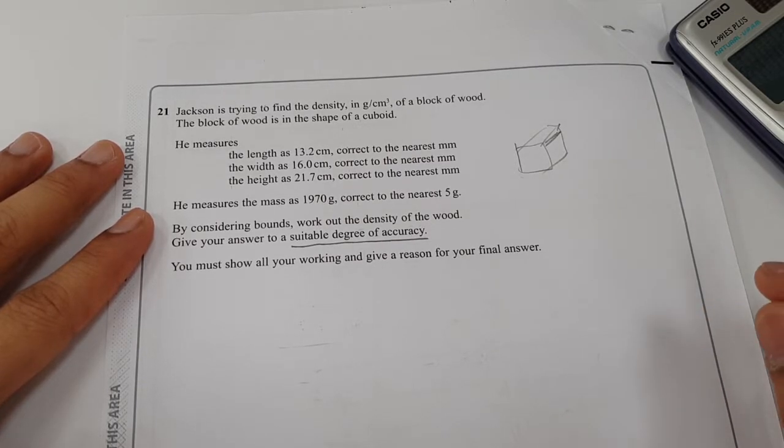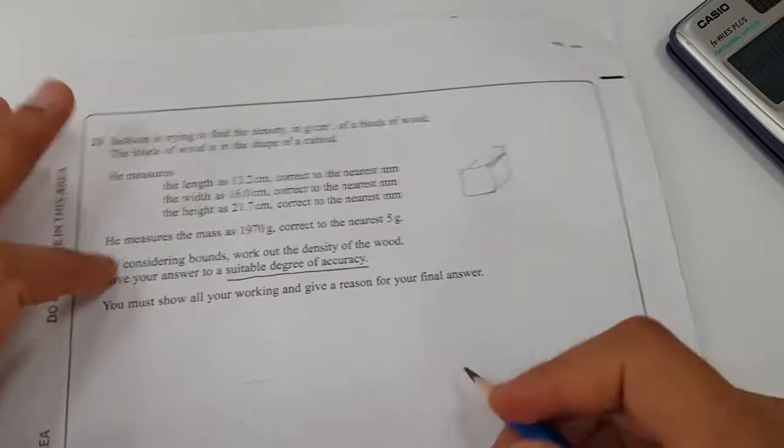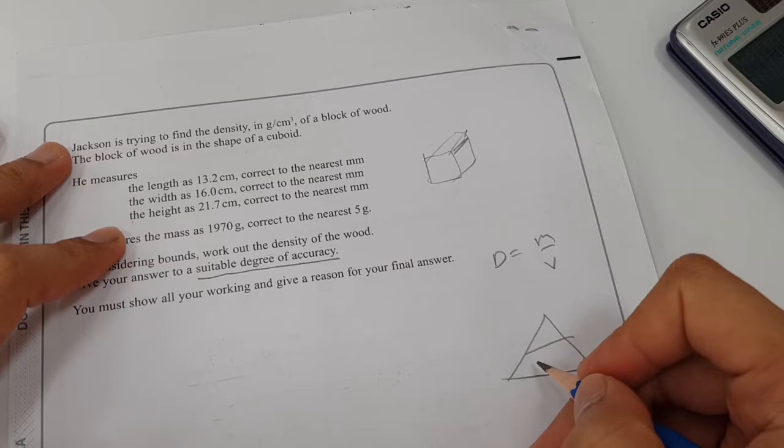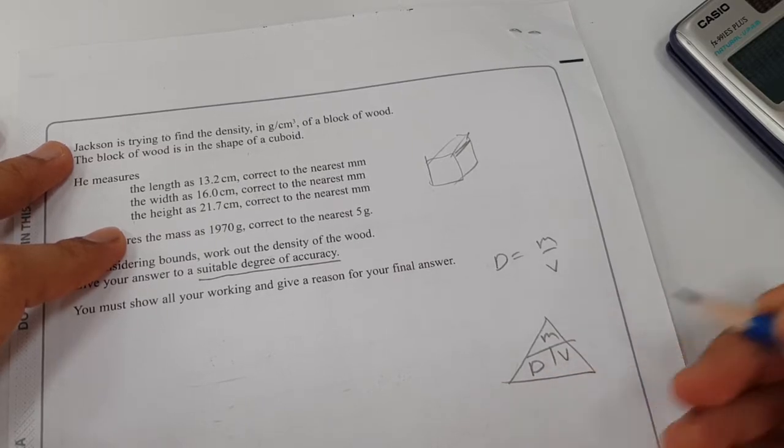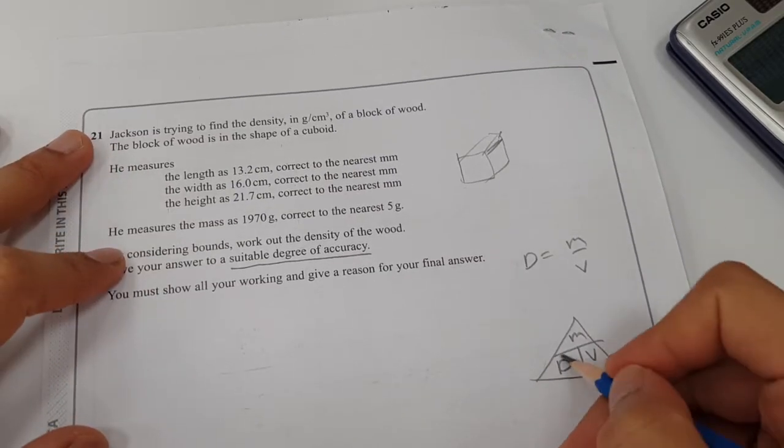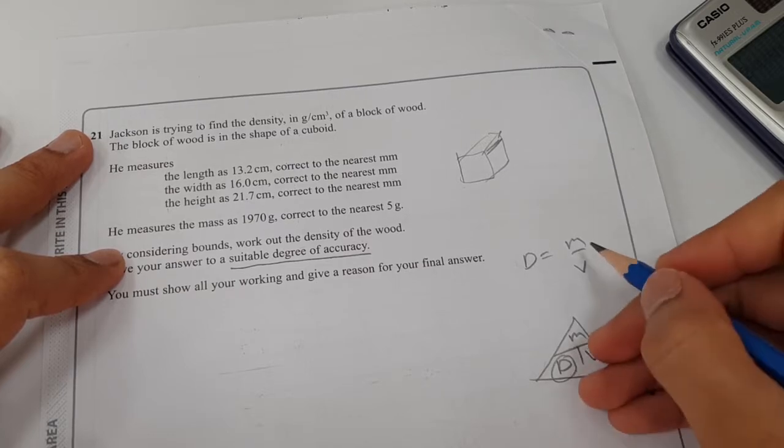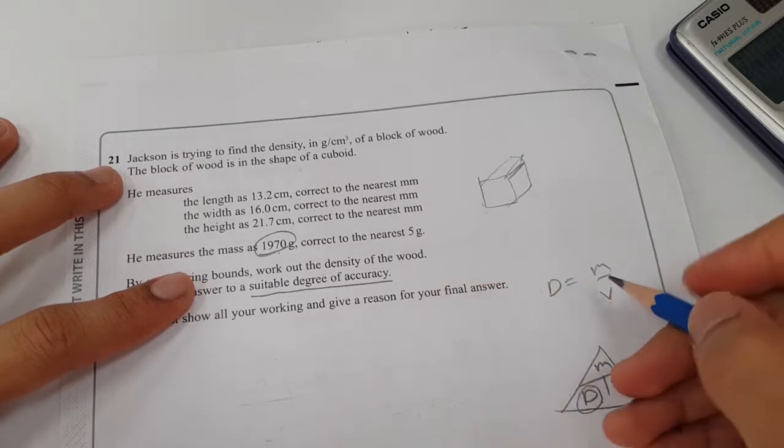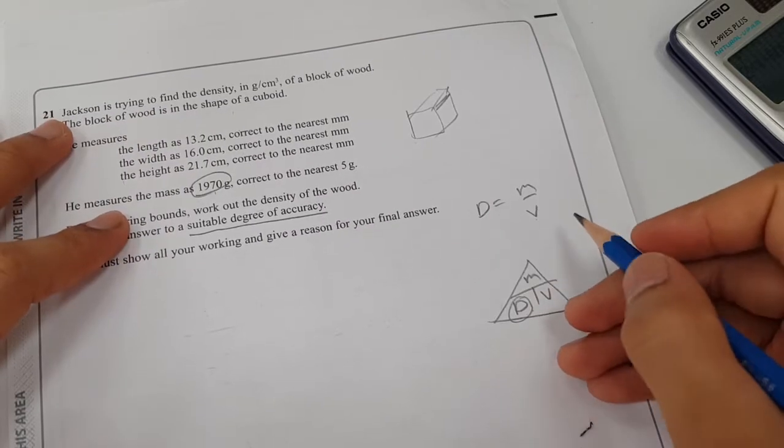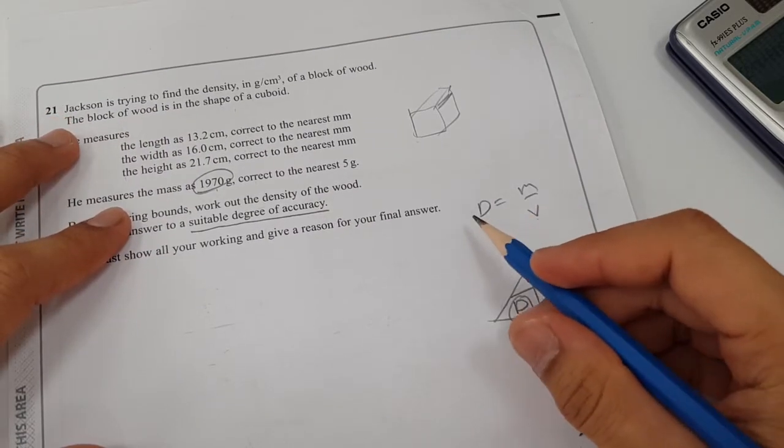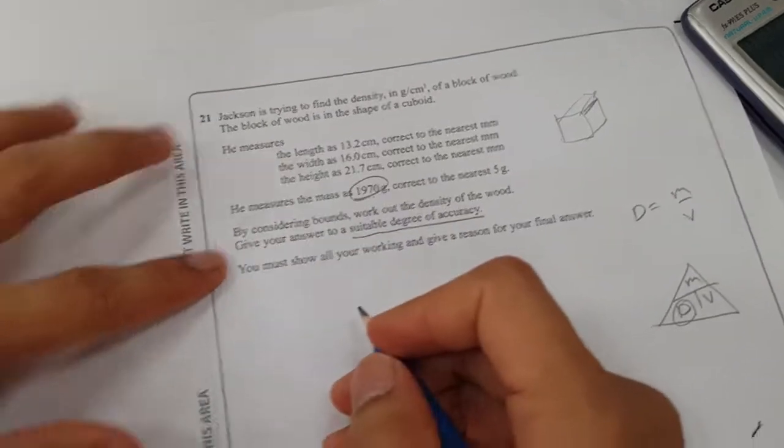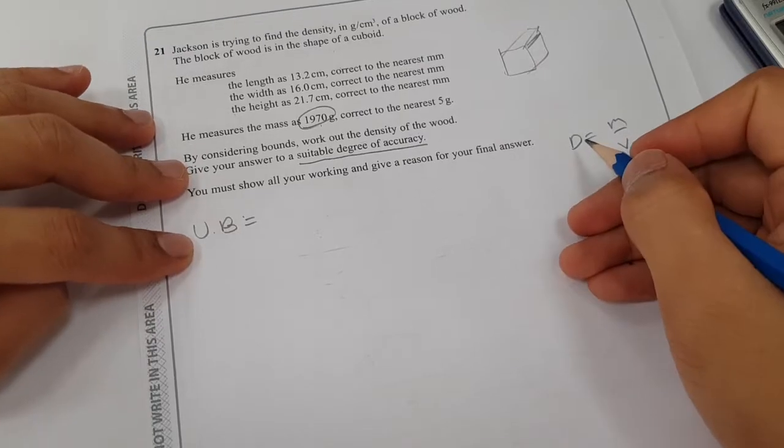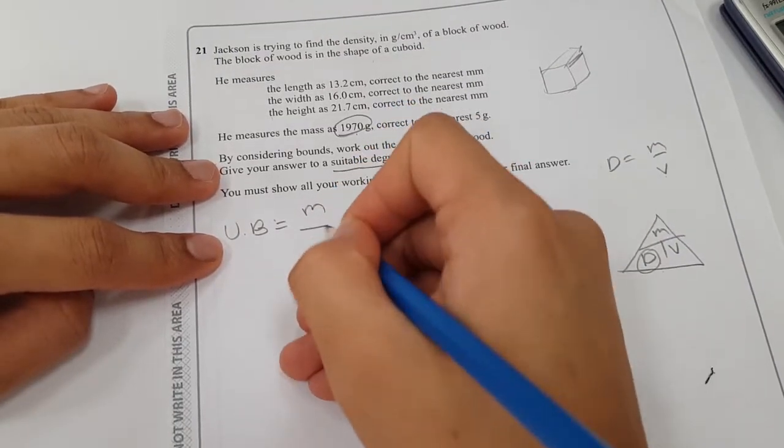How are we going to find the upper bound and lower bound of our density? Density is equivalent to mass over volume. We already have the mass and the volume. So all we have to do is find the upper bound of the density and lower bound. When you say upper bound of our density, we have to do mass over volume.